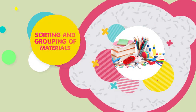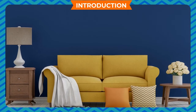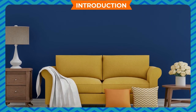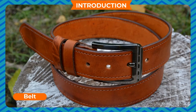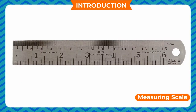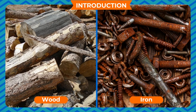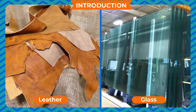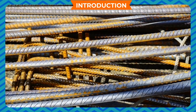Sorting and grouping of materials: an object can be made using a number of things. For example, a chair is made up of wood, iron, or plastic, and a belt is made up of leather and steel. A measuring scale may be made up of wood or iron. These things are called materials. Steel, wood, plastic, glass, leather, etc. are examples of materials.